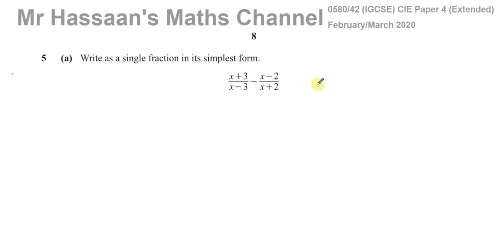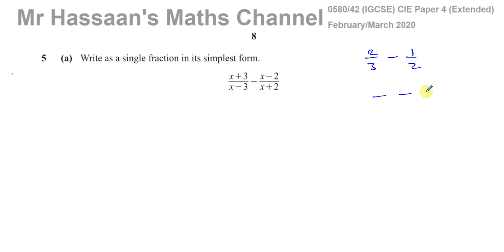When you're subtracting two fractions — for example, if I have two thirds minus one over two — what I do to solve this problem, I do exactly the same to solve that algebraic problem. This just looks a bit more complex because of the x's, but the same principles apply. One way of solving a question like this is to make the denominators the same by finding the LCM of the denominators. The LCM of three and two is six, so I write six and six here. Similarly, for the algebraic version, I can do exactly the same.